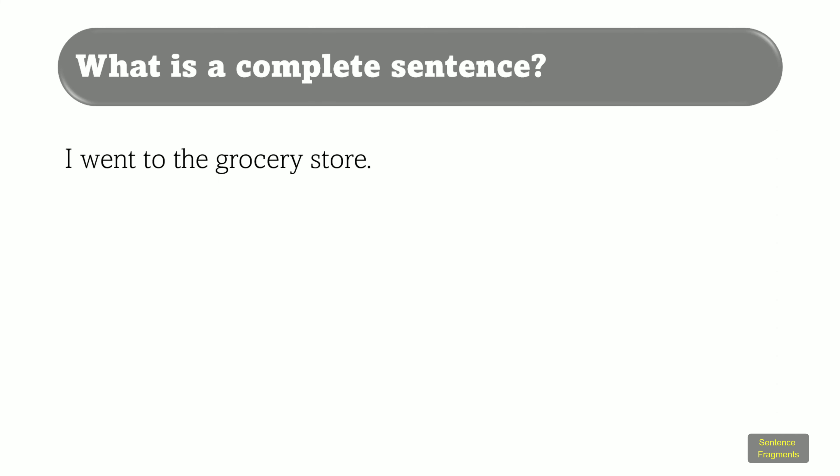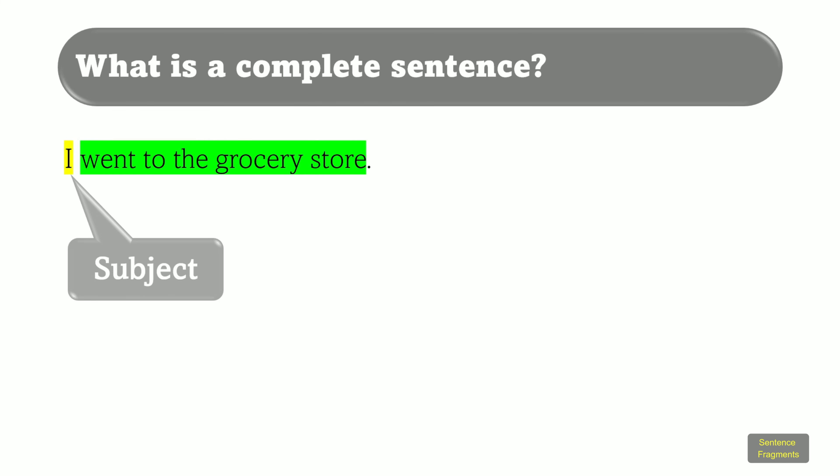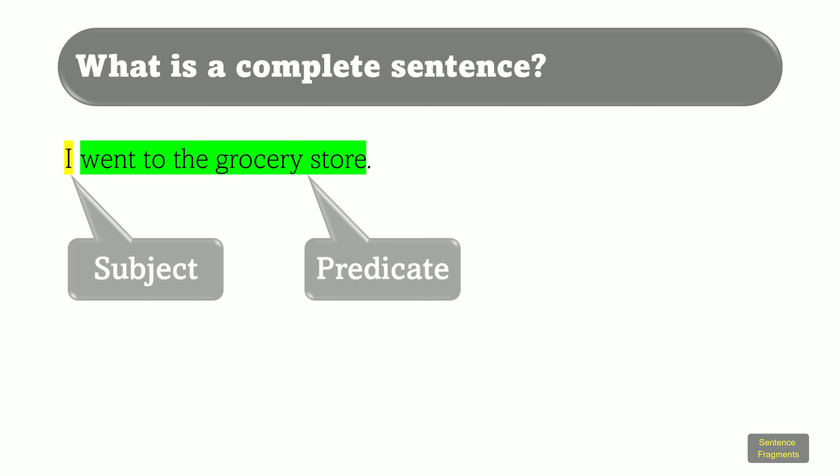We know who is performing the action of going to the grocery store — in this case, 'I', also known as the subject of the sentence. And we know what action was performed: going to the grocery store, and it is in the past tense. This part of the sentence is known as the predicate.